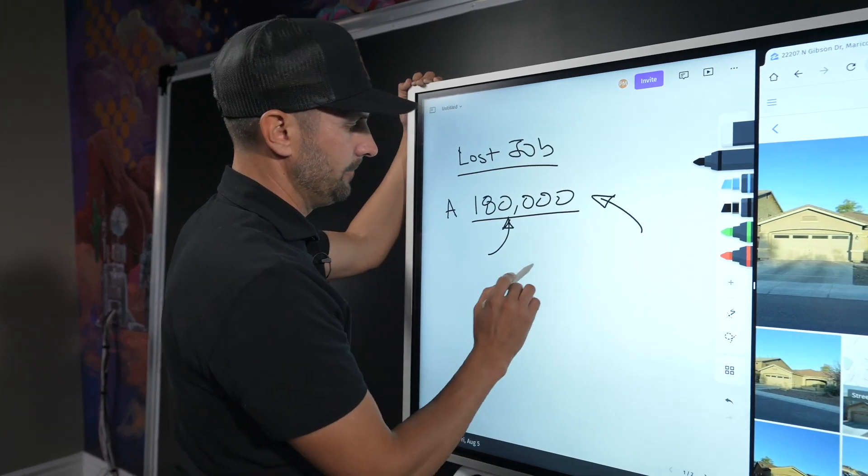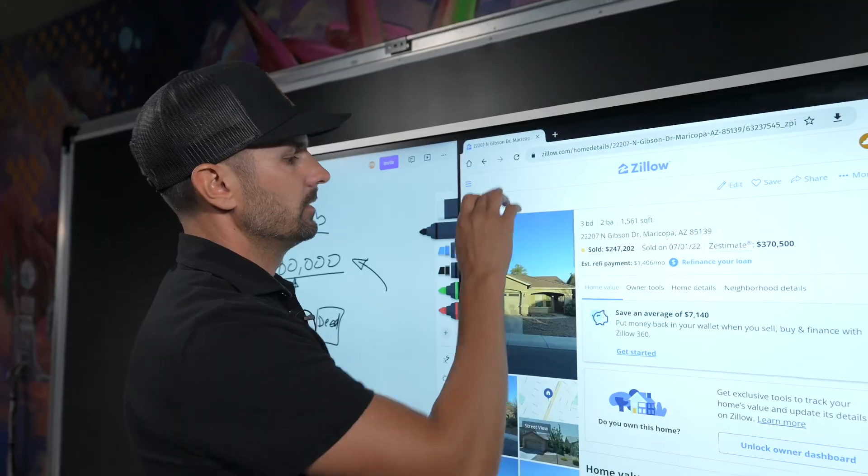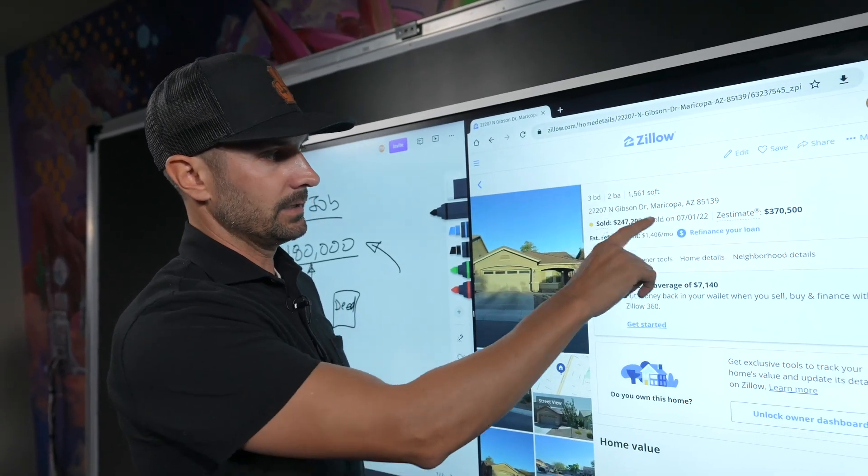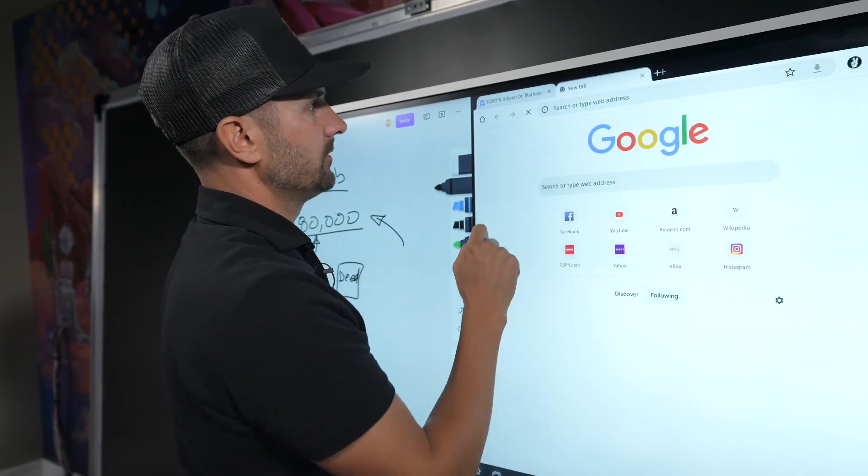People think you can't buy a house unless you pay off the other debt, and the reality is that's not true. Subject-to allows me to just make payments towards that $180k and I have the deed in my name.